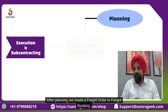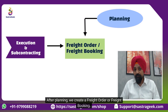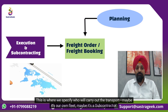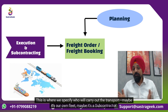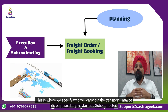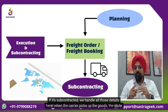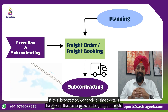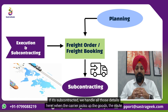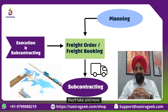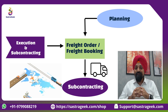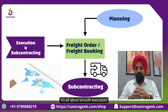After planning, we create a freight order or freight booking. This is where we specify who will carry out the transport — maybe it's our own fleet, maybe it's a subcontractor. If it's subcontracted, we handle all those details here: when the carrier picks up the goods, the route they'll take, and more. It's all about smooth execution.